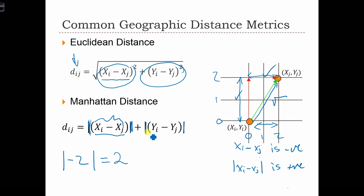yi minus yj is going to be minus 2. And therefore, yi minus yj in absolutes is equal to 2. So the Manhattan distance, in this case, is equal to 2 plus 2 equals 4.